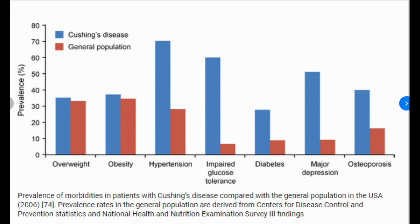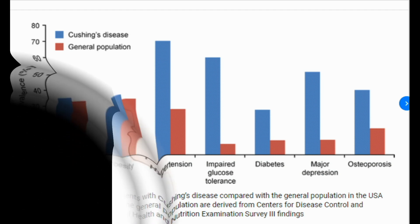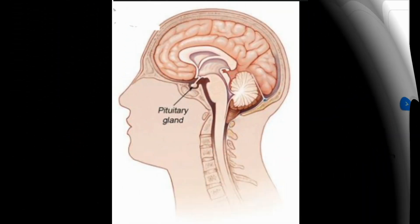An estimated 10 to 15 per million people are affected every year. Pituitary adenomas (Cushing's disease) account for more than 70 percent of cases in adults and about 60 to 70 percent of cases in children and adolescents. Cushing's syndrome most commonly affects adults ages 20 to 50 and is more prevalent in females, accounting for about 70 percent of all cases.